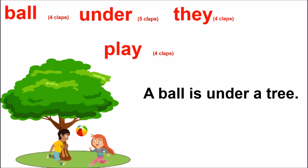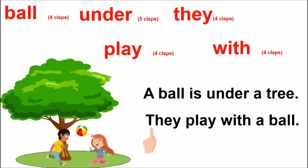Woh ball ke saath khil rai hai. With a ball. Read this word. W-I-T-H. With. Now, read the sentence. They play with a ball.